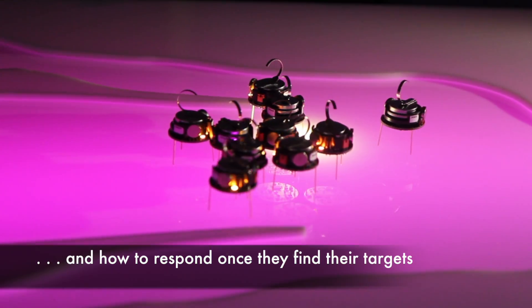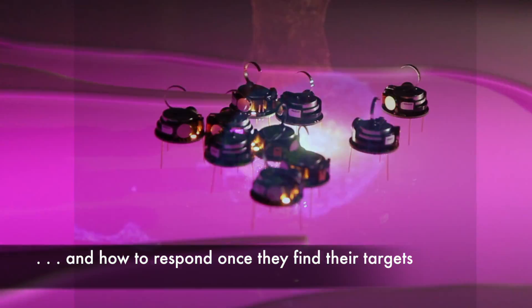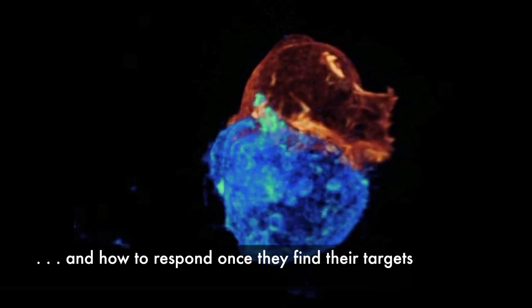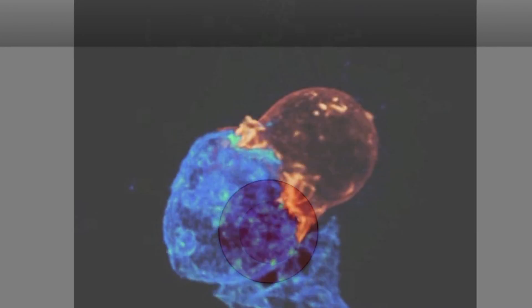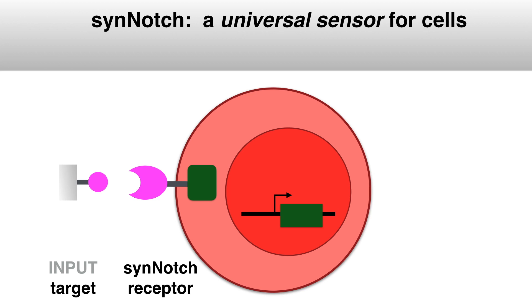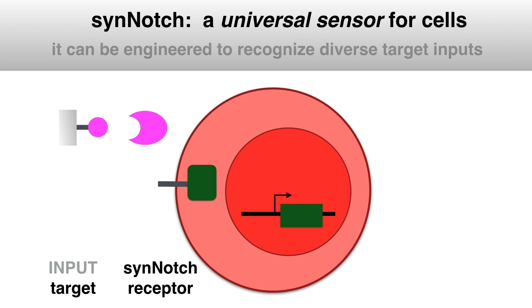We program T-cells using a universal sensor molecule called SynNotch. By changing the outside head of SynNotch, we can engineer cells to recognize different targets.